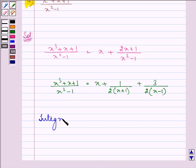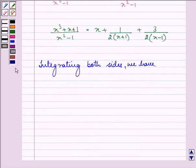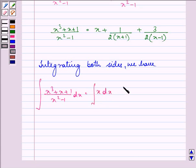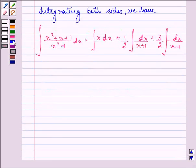Now, integrating both sides, we have the integral of (x³ + x + 1)/(x² - 1) dx equals integral of x dx + 1/2 integral of dx/(x + 1) + 3/2 integral of dx/(x - 1).